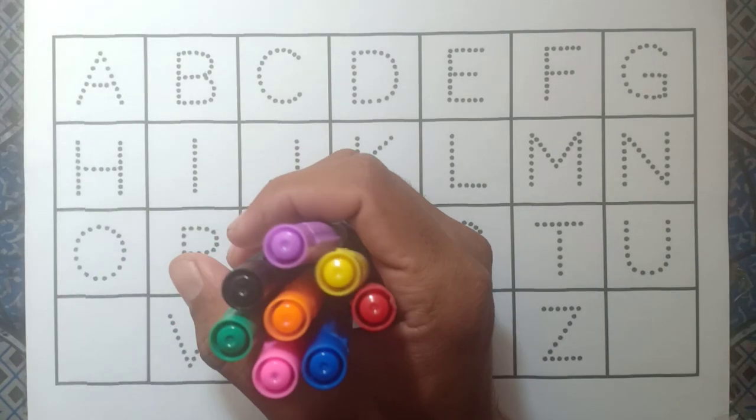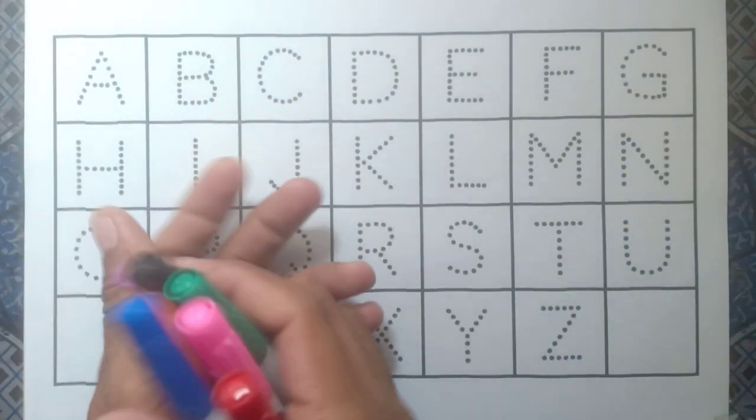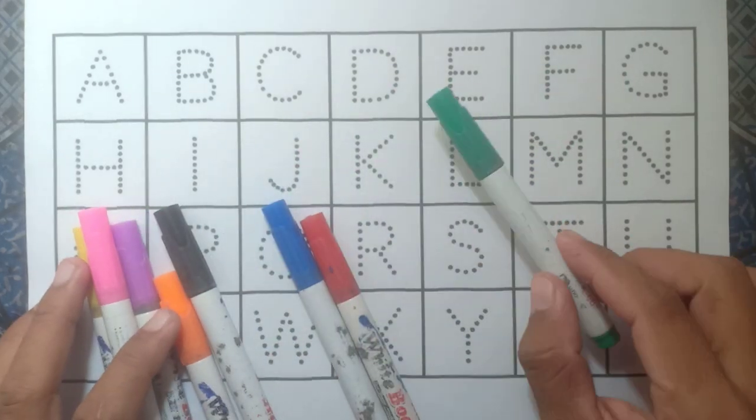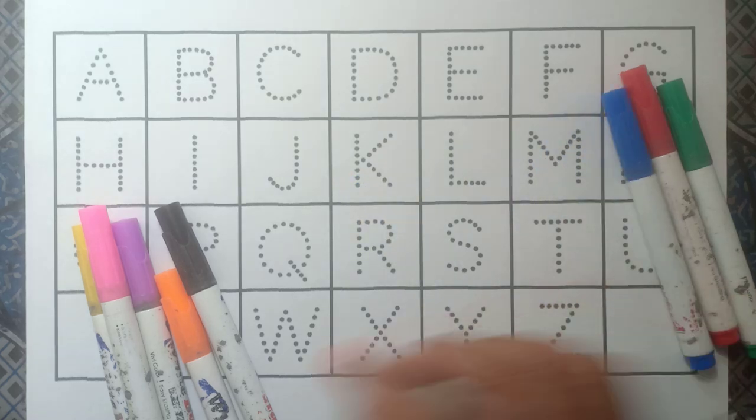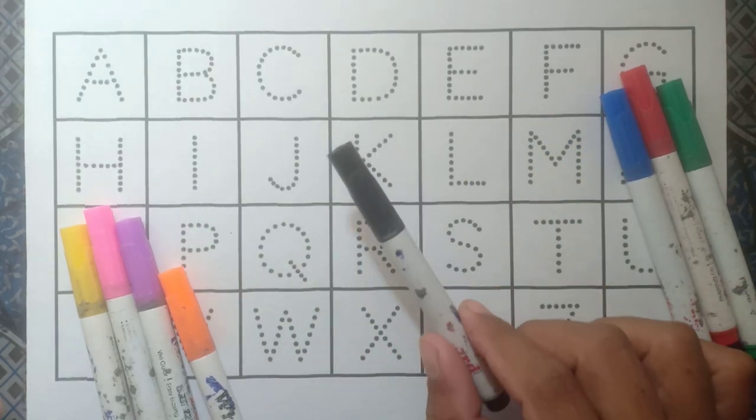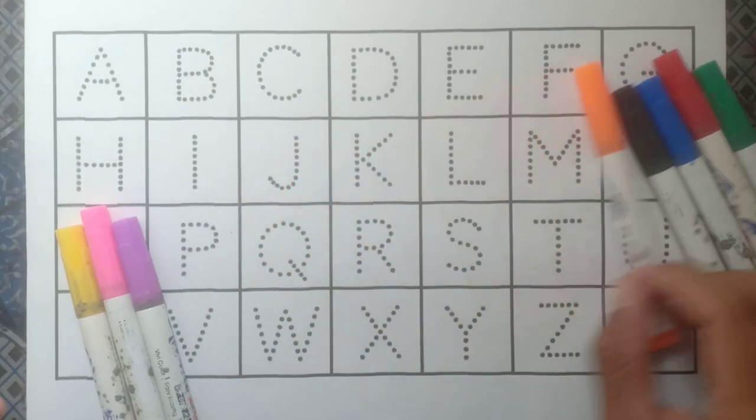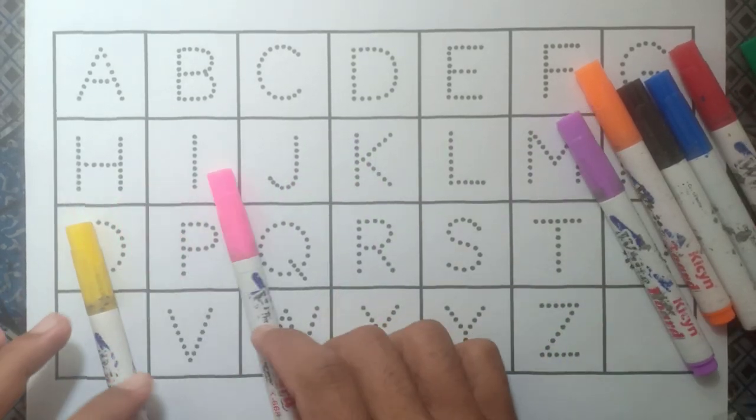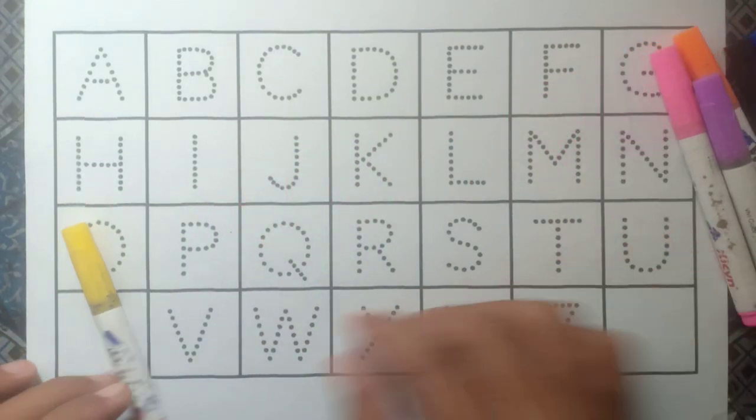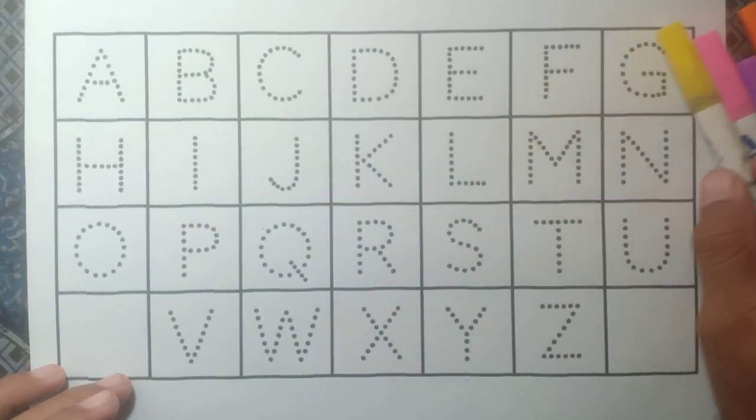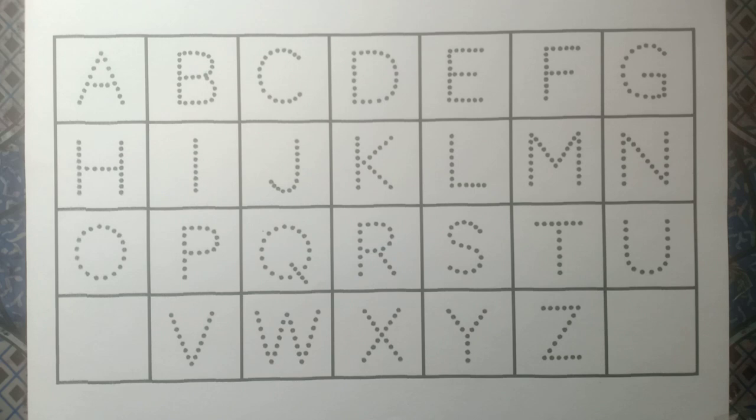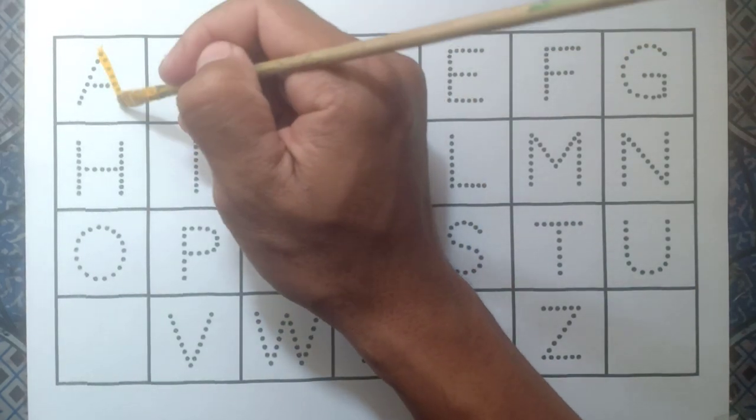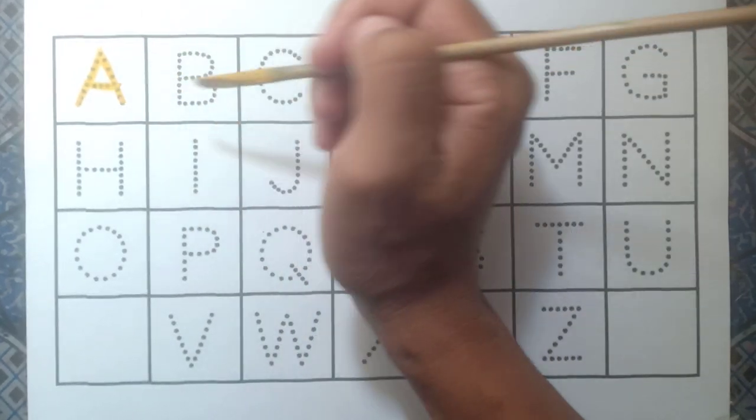Hello kids, how are you today? Let's learn some colors: green color, red color, blue color, black color, orange color, purple color, pink color, and yellow color. Okay kids, let's learn alphabets. Are you ready?